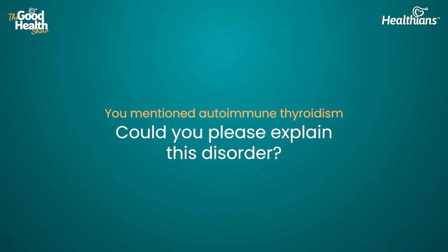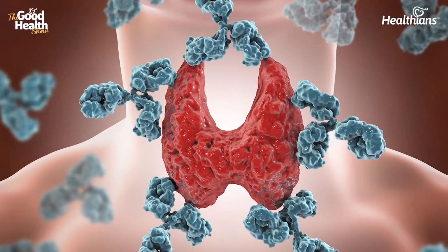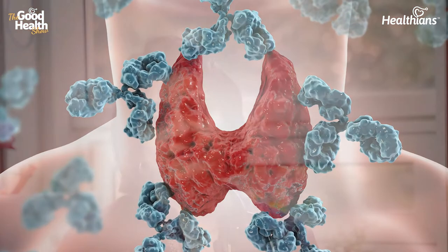You mentioned autoimmune thyroidism — could you please explain this disorder? Autoimmune hypothyroidism is the commonest disorder. The immune system is supposed to fight things that attack us from outside, like viruses. It knows what is self and what is non-self — it can recognize cells that attack from outside versus cells that belong to the body. But if there is a problem in this recognition and the immune system gets confused and attacks its own thyroid cells, thereby affecting their function, that is called autoimmune.